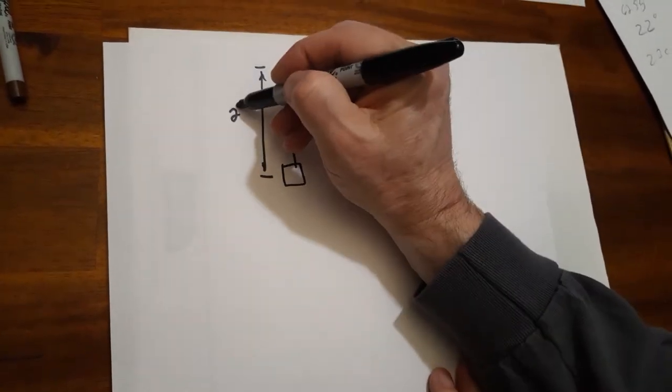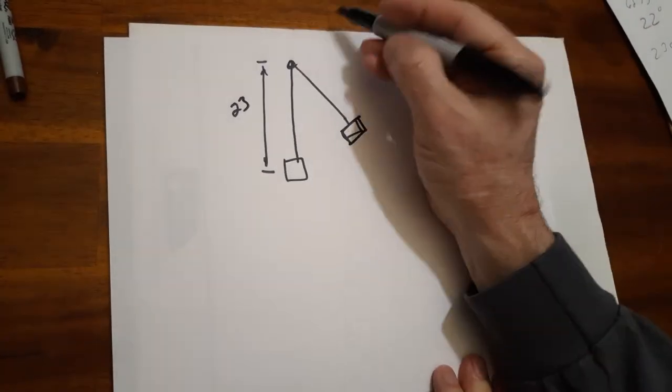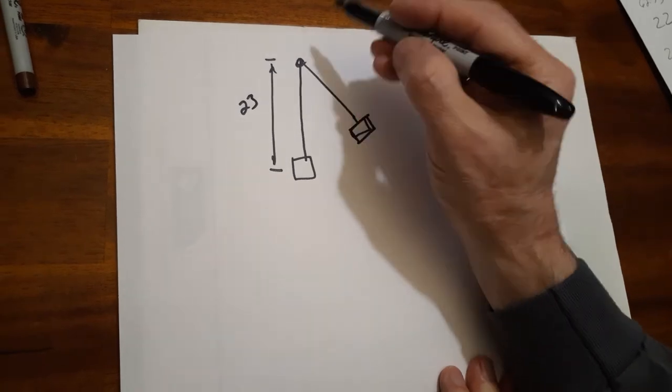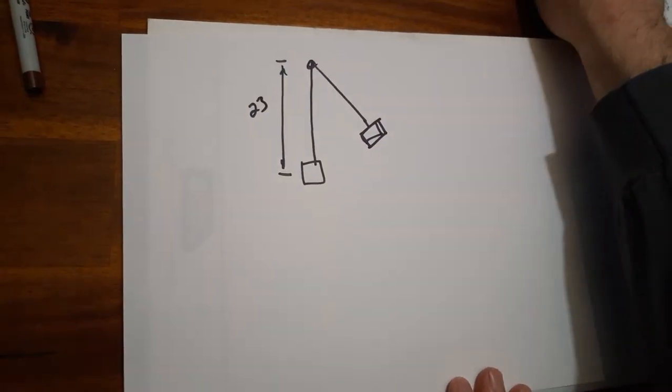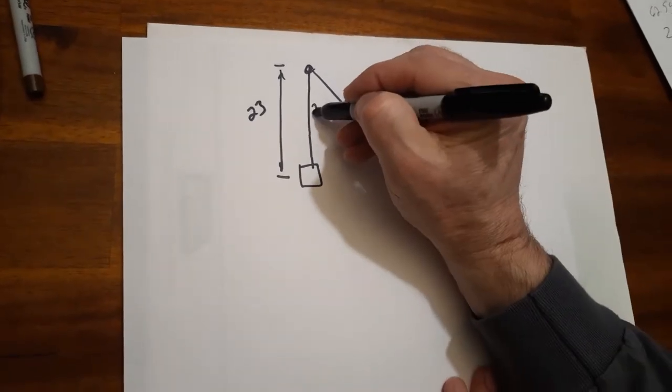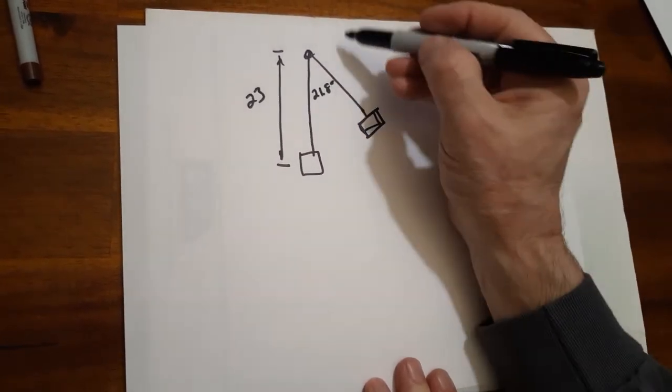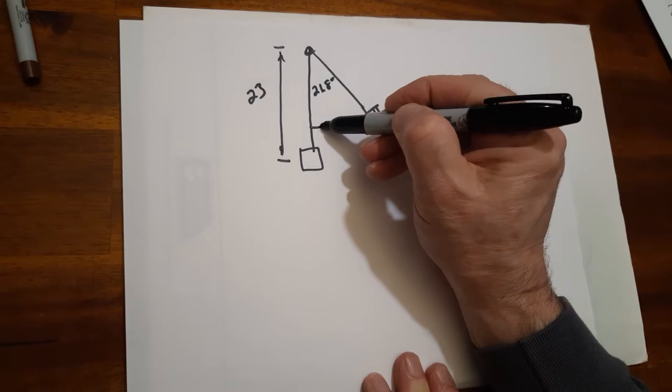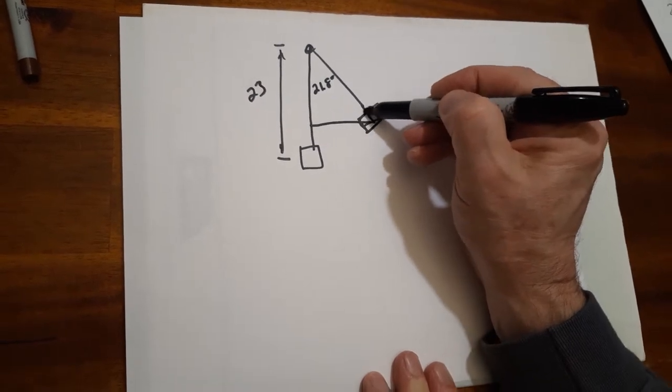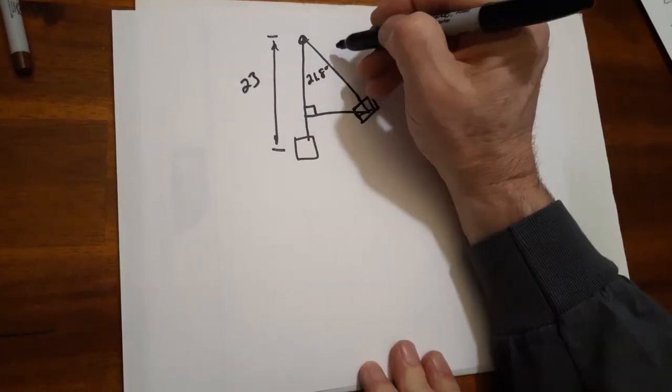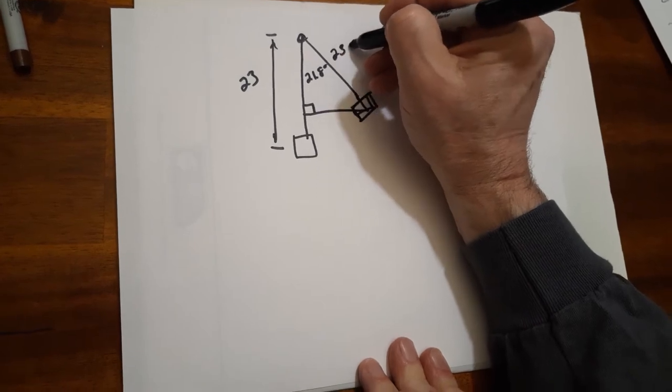We said 23 centimeters and of course we also had an average angle of 21.8 degrees. So basically you have a little bit of a triangle here that's 23, that means this side is 23 centimeters also.